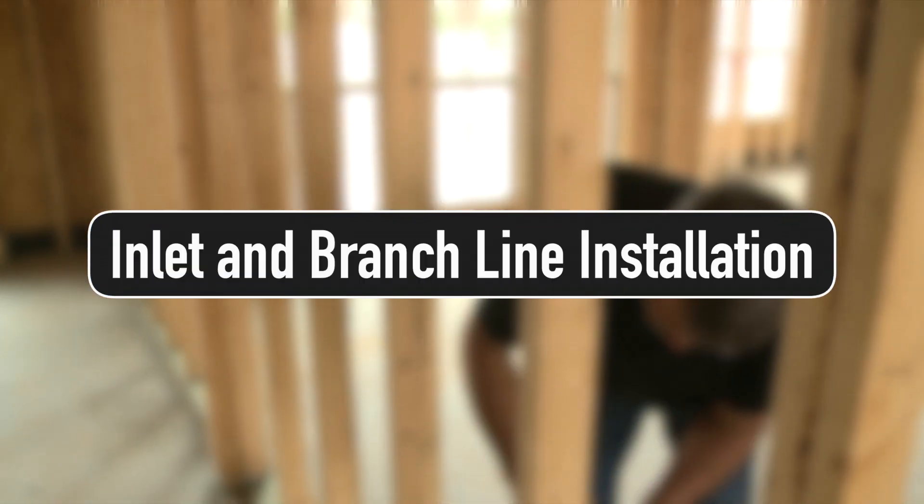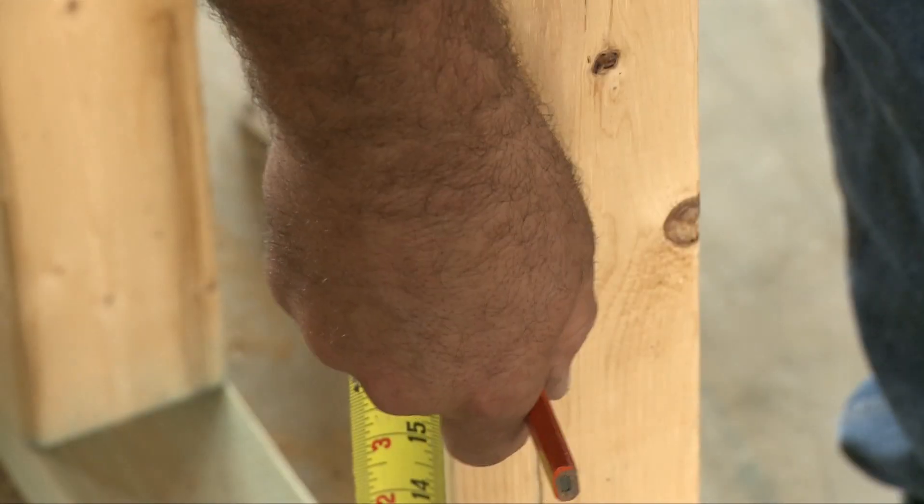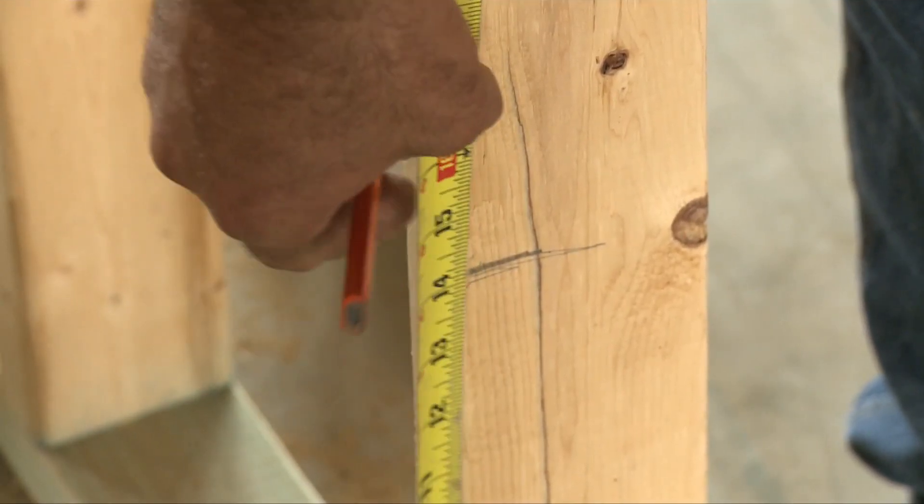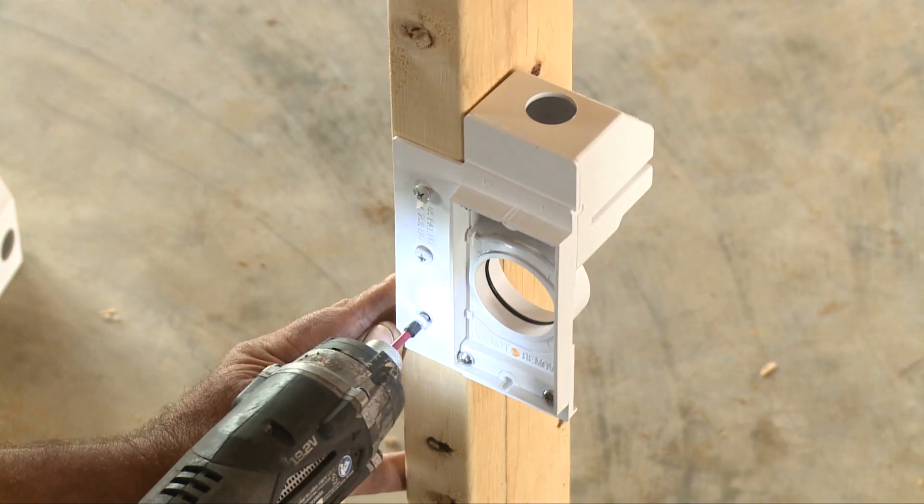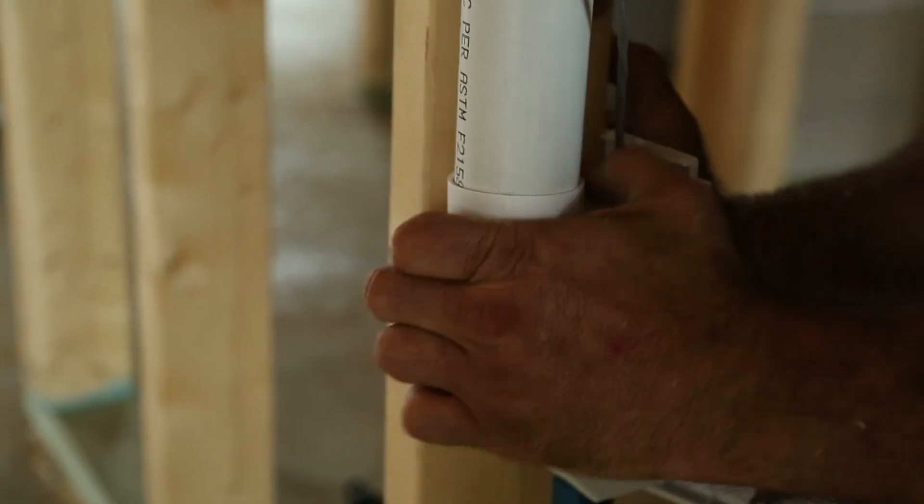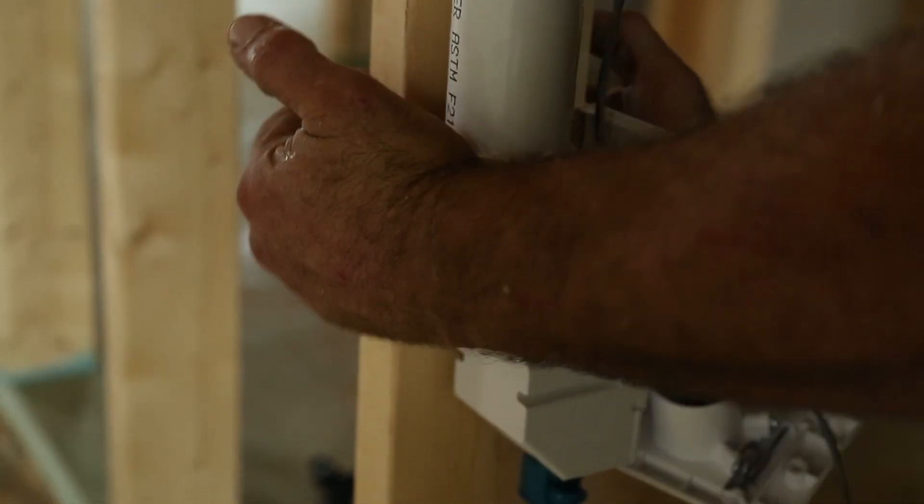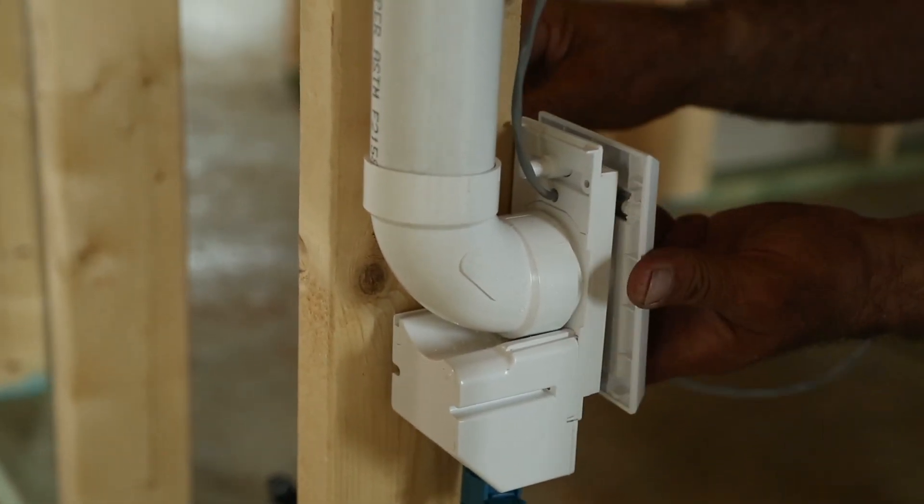Once you have completed your plan, start your installation by mounting the inlet brackets. Measure 18 inches from floor level on the stud you have selected in your plan and fasten the bracket to the stud with screws. After mounting the bracket, glue a short 90-degree elbow to the back connection of the bracket facing toward the location of your planned trunk line. Always apply PVC cement to the back of the mounting bracket rather than to the inside of the elbow.